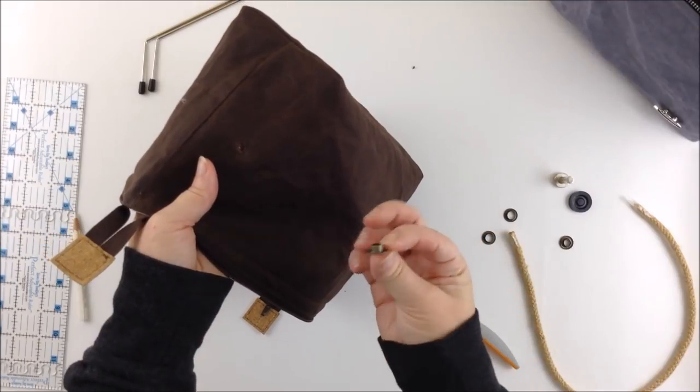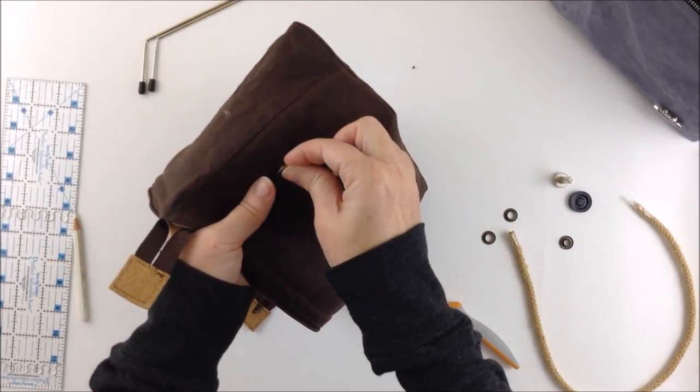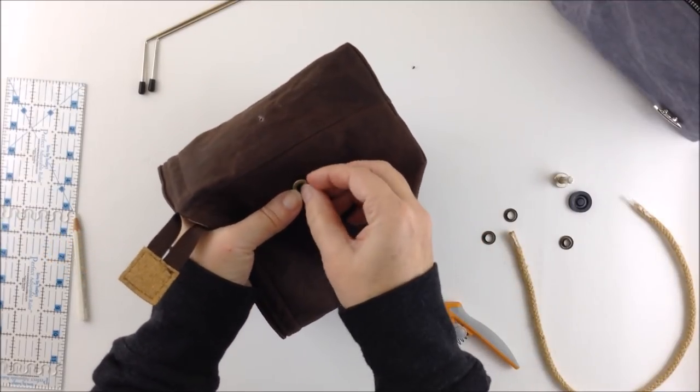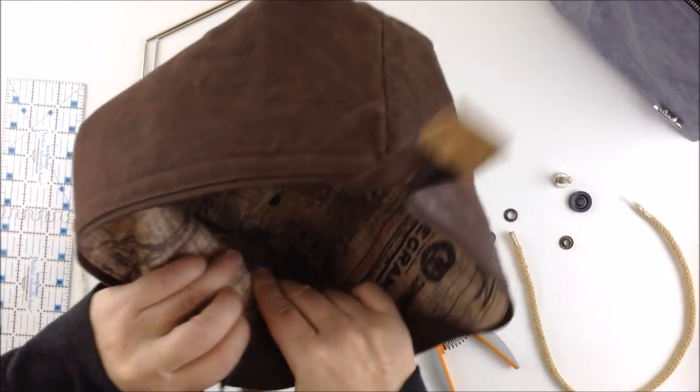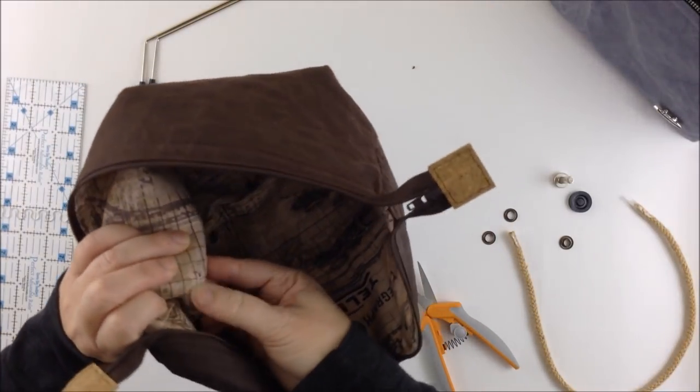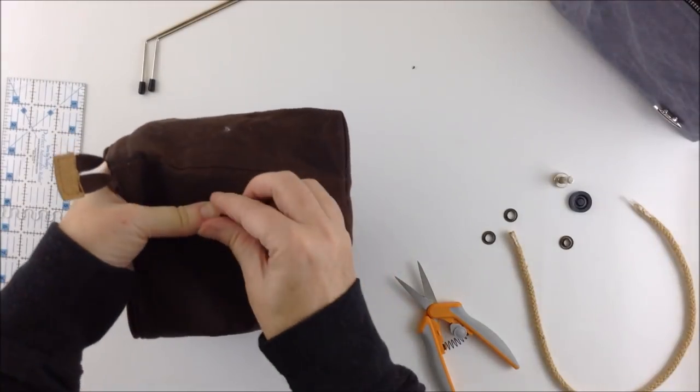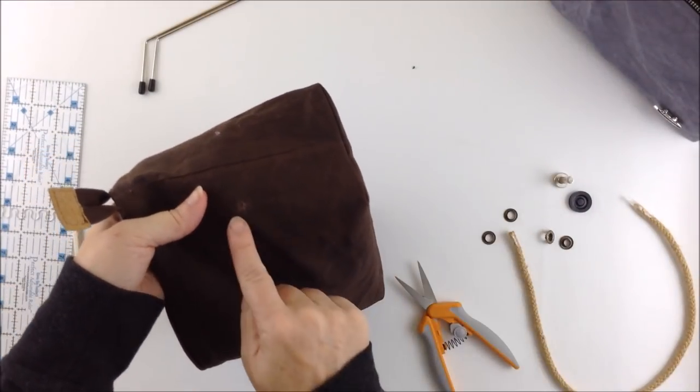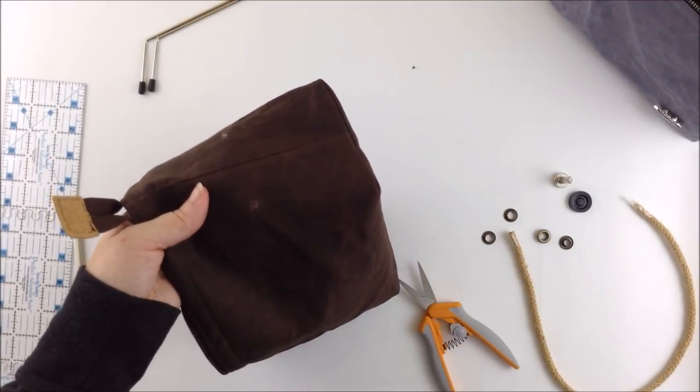Then you're going to insert one of the grommet ends through that. And you may need to adjust your hole if it's not going through but it's better to start off small and then gradually get larger.